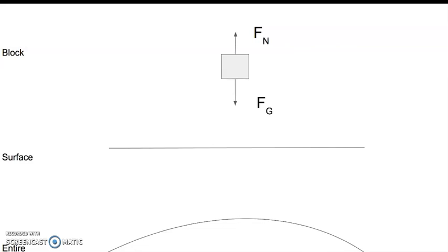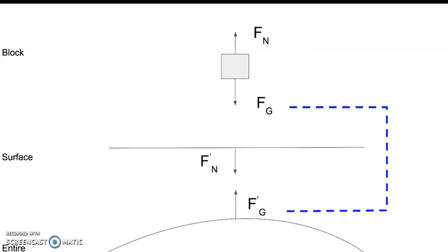Now this force of gravity — if you remember Newton's Third Law, every action has an equal and opposite reaction, and this opposite reaction happens on a second object and is equal in magnitude but opposite in direction. So we need to create force pairs. This force of gravity has a force pair: if the Earth is pulling down on the block, then the block is also pulling up on the Earth. And if the surface is pushing up on the block, the block is also pushing down on the surface. Let's identify these force pairs with some dashed colored arrows.